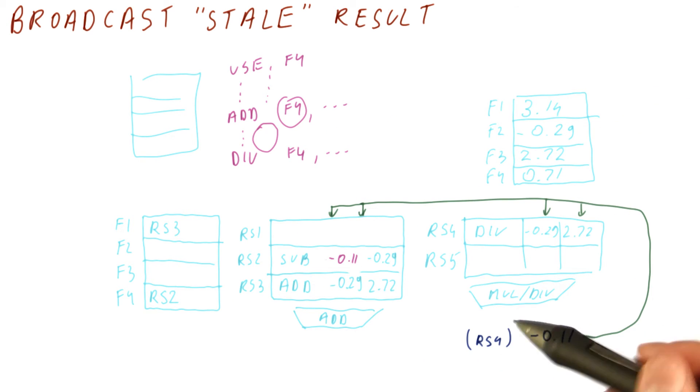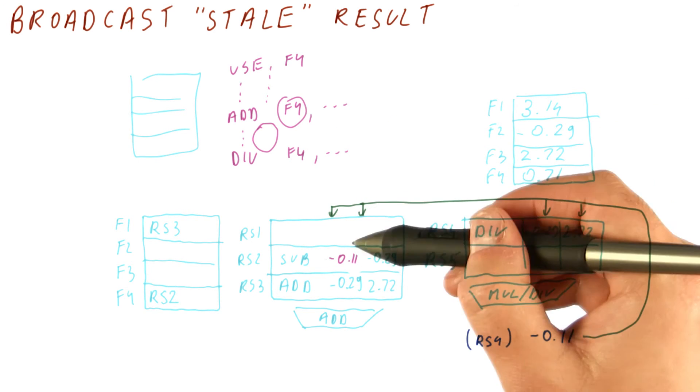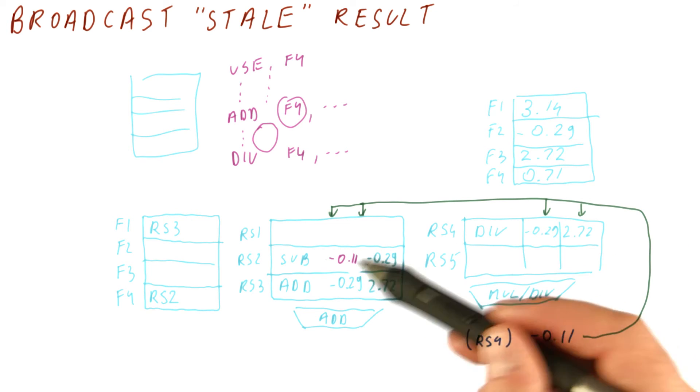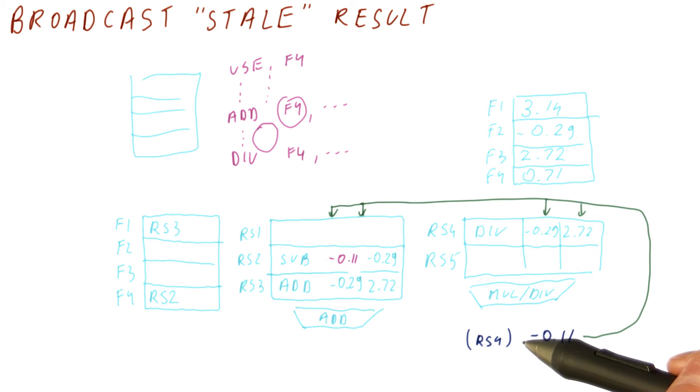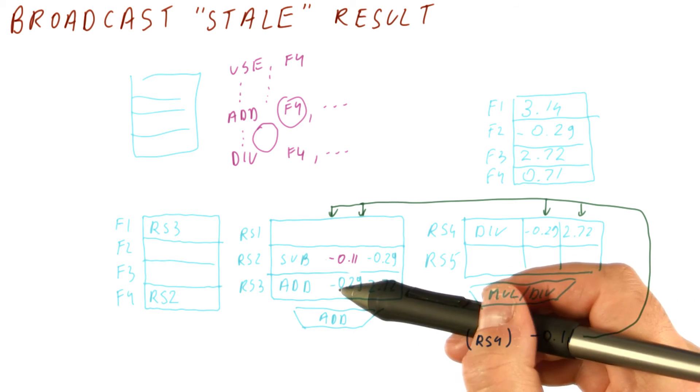So pretty much what we're doing is when we broadcast this and capture it here, we're giving it to any of the instructions that sit between this divide and this add that are actually using this result.